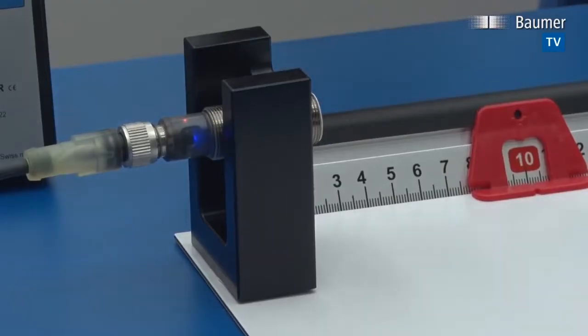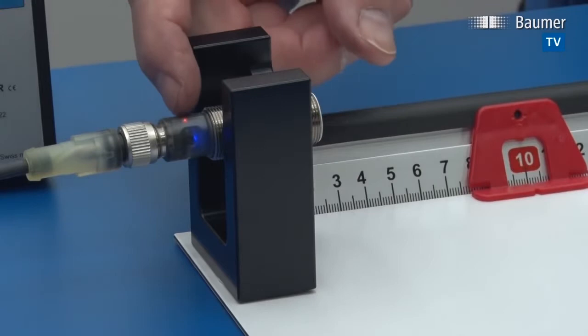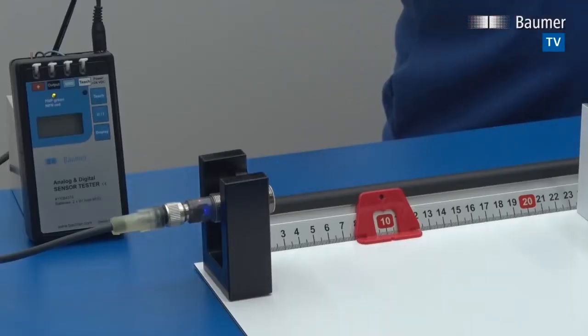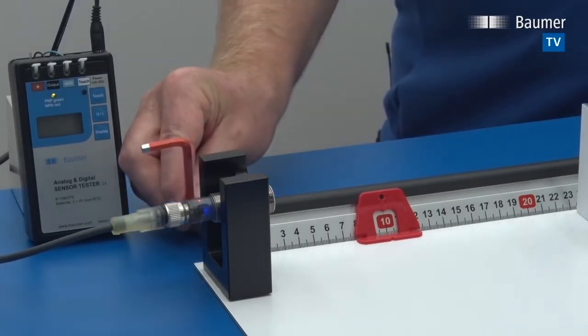The sensor can be taught when the blue light is present. After these five minutes the blue LED switches off. You teach the sensor by using a ferromagnetic tool that is a spanner, a screwdriver, or a hex key.